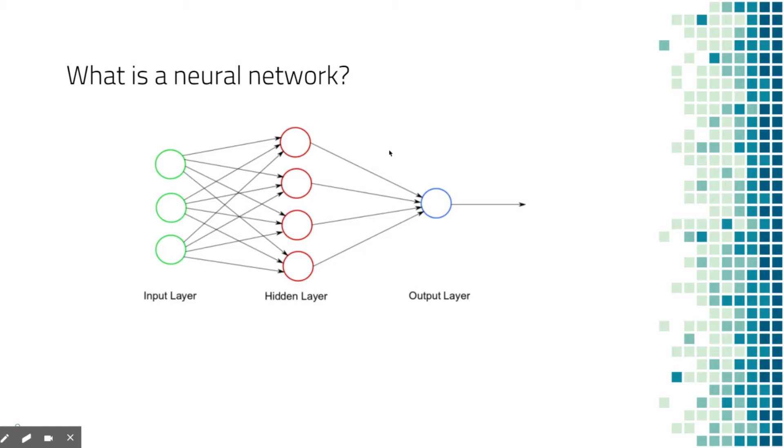Artificial neural networks, or ANNs; recurrent neural networks, or RNNs; and convolutional neural networks, or CNNs.